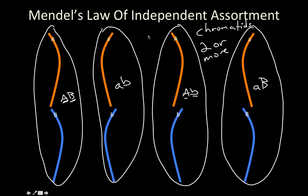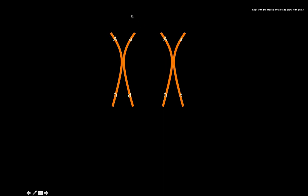Chromatids for different chromosomes separate without regard for one another — one chromatid does not dictate how the other chromatids have to separate at all. This was originally proposed by Mendel as: alleles for different genes will separate independently of one another. We restate it as: chromatids for two or more different chromosomes will separate into gametes independently of one another. That's Mendel's law of independent assortment.